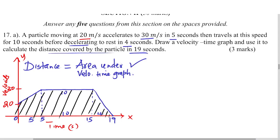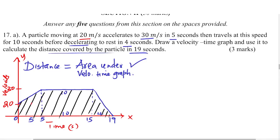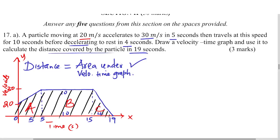Now, we look at the shape enclosed by this graph — it is an irregular shape, not a trapezium. So the best thing to do is to divide it into three regular shapes. The first one is A, the second is B, and the third is C. Shape A is here on the left, B is in the center, and C is on the right.